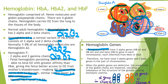Hemoglobin A genes have two alpha genes and one beta gene in each chromosome, inherited from mom and dad. Therefore, we have four alpha genes and two beta genes. The alpha genes are located in chromosome 16, two genes in each chromosome, for a total of four alpha genes.